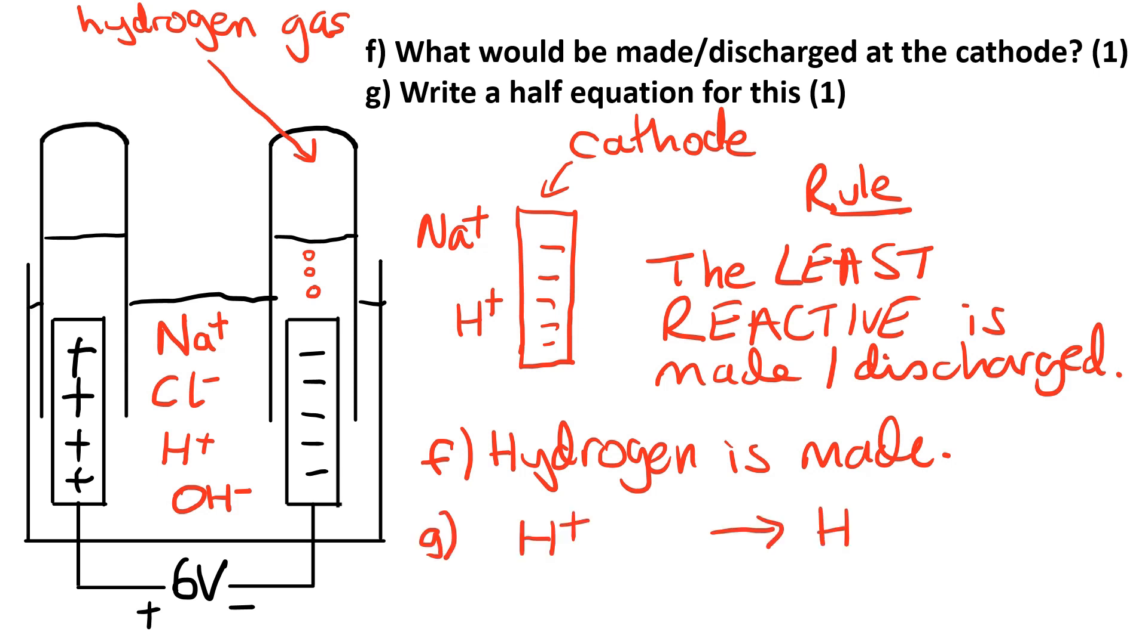For the half equation, once again we remember that ions change into atoms. We need to put an electron either on the left or on the right—in this case it goes on the left because now we've got 1+ and 1- on the left which cancels out. But we do need to remember the second stage: hydrogen goes around in pairs, so to become H2 we need to start off with two hydrogen ions and two electrons, so we double up on that second part of the equation.